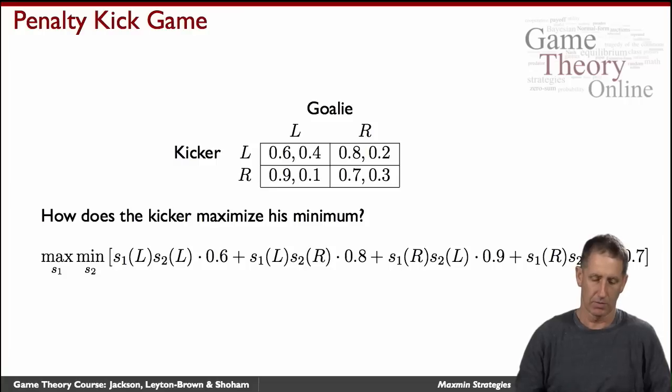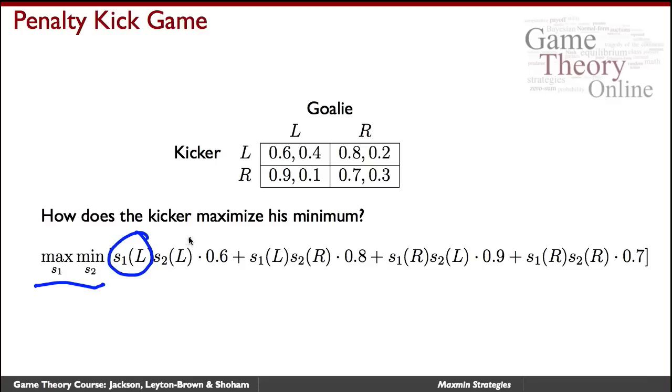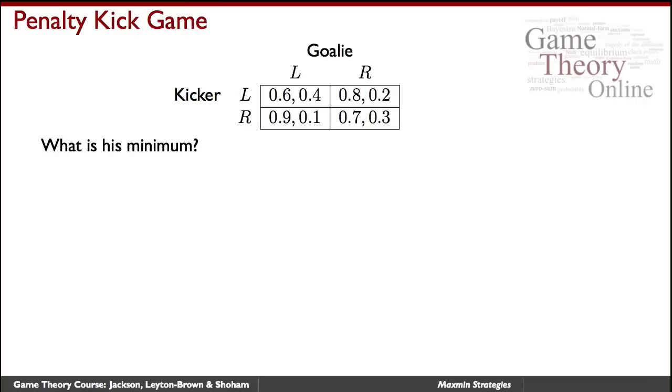So how does the kicker maximize his minimum? That's what we're after. So here is the expression. We want the maxmin value of the following. So they each have some mixed strategy of playing left and right with some probability. So S1L is a probability that the kicker kicks to the left, and S2L is a probability that the goalie jumps to the left. And as we saw in that case, the value is 0.6. And similarly, the value of 0.8 is if we end up in this situation, 0.9 and 0.7 in these situations. So this is the expression that we somehow need to compute.